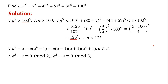Similarly, a to the power of 5 minus a contains the product of three consecutive numbers: a minus 1, a, and a plus 1. So a to the power of 5 minus a is divisible by 3, meaning it is congruent to 0 mod 3. In addition, a to the power of 5 minus a is congruent to 0 mod 5 by Fermat's little theorem. As it is divisible by 2, 3, and 5, it is divisible by 10.